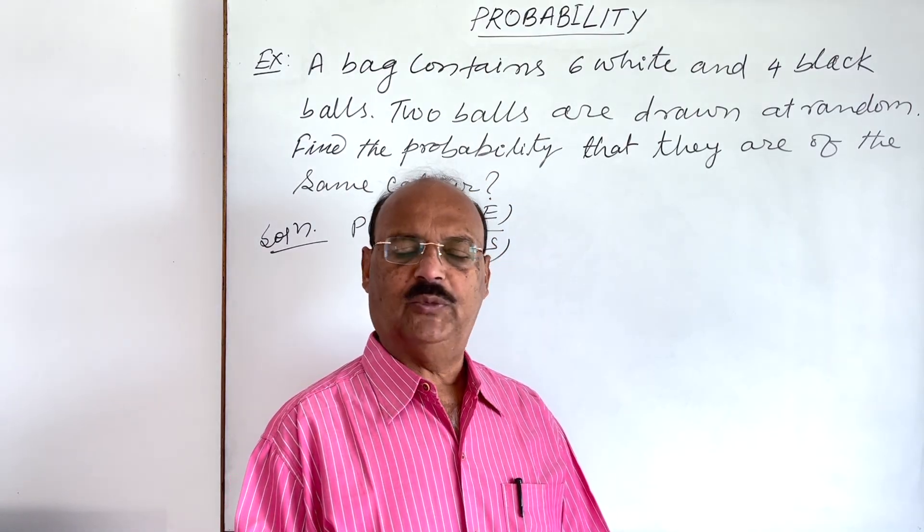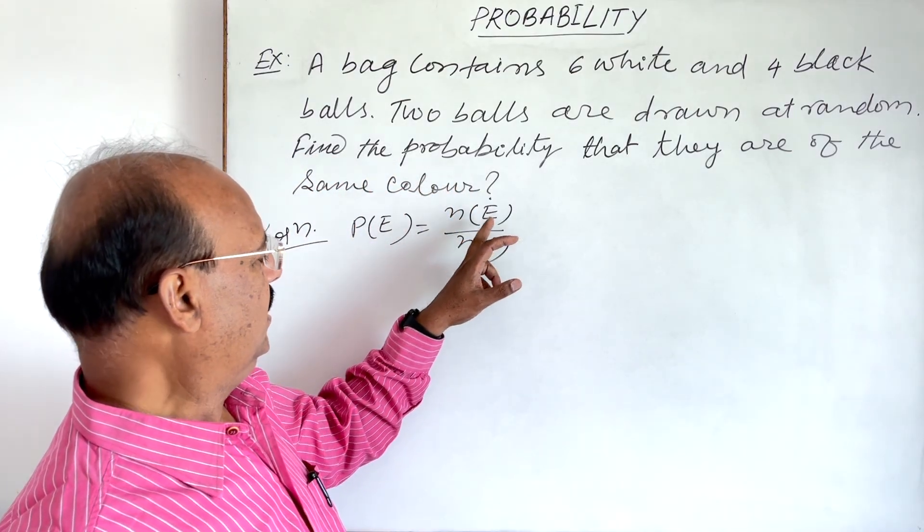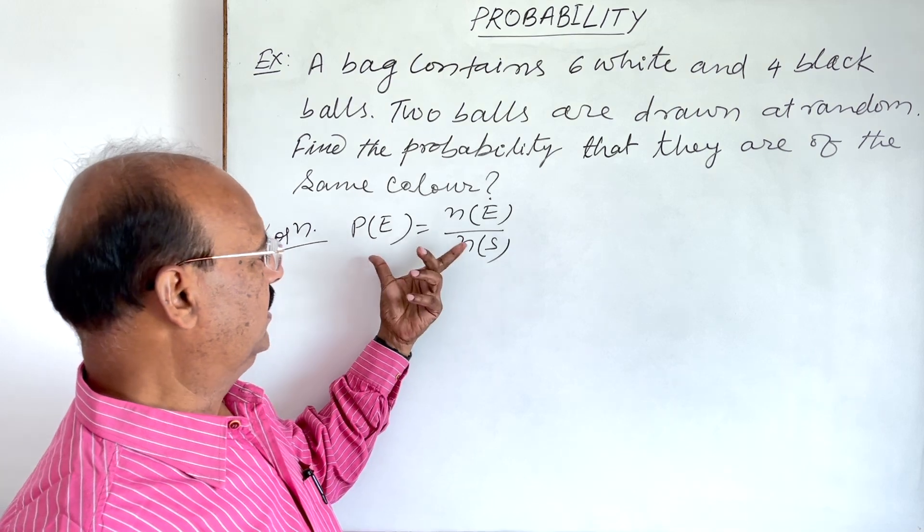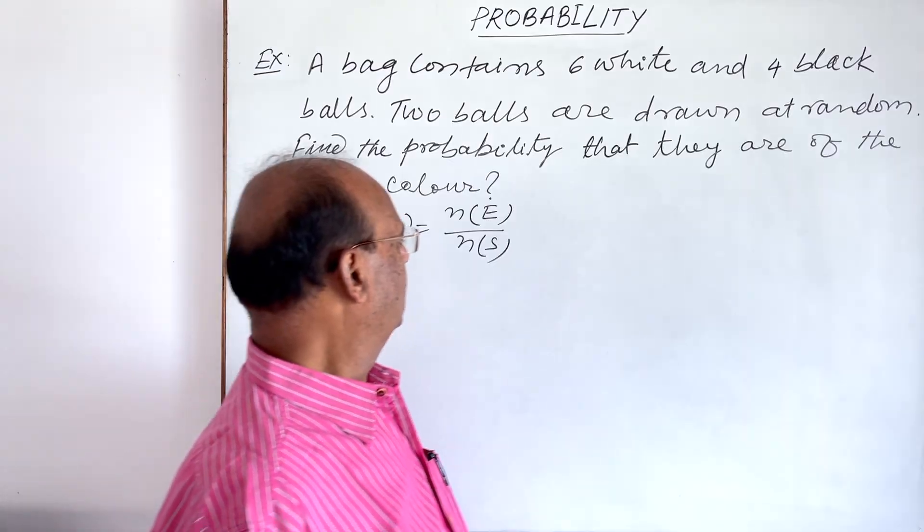S is a sample space, and sample space is a set which consists of all possible outcomes. So here first of all we have to find out n(E) and n(S), and using this formula we can find out the result very easily.